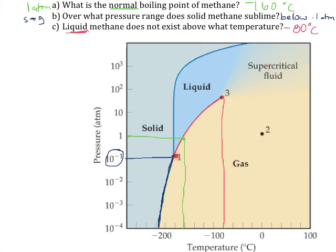This point here — point number one — is called the triple point. This is the temperature and pressure at which all three phases, solid, liquid, and gas, exist in equilibrium. If you can get to this temperature and pressure, you will have a combination of all three phases at once. Those are the regions of the phase diagram you should be familiar with.